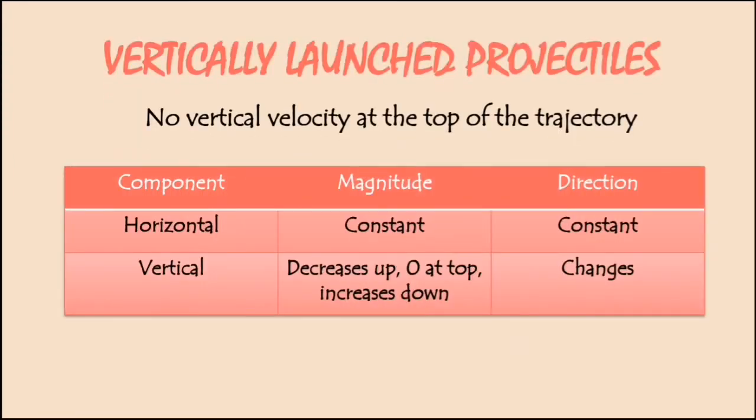This is the summary of vertically launched projectiles. Horizontal remains constant. Vertical: the magnitude decreases up, zero at top, and increases down. And direction changes, of course.